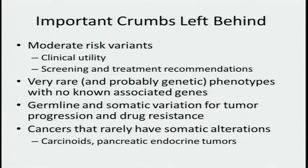Rare phenotypes don't associate with known genes. Germline and somatic variation for tumor progression and drug resistance — how do the two interact to predict that? And cancers that rarely have somatic alterations: it's strange that carcinoids and pancreatic endocrine tumors, even though they're apparently sporadic, very rarely show somatic genetic alterations compared to, say, lung cancer or breast cancer. Does that mean it's epigenomic, or that there will be multiple variations in the germline? And with that, I'll stop and take questions.